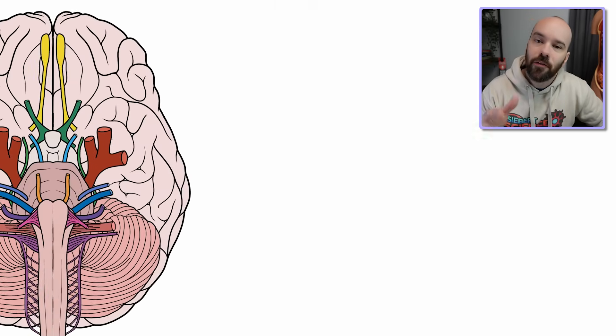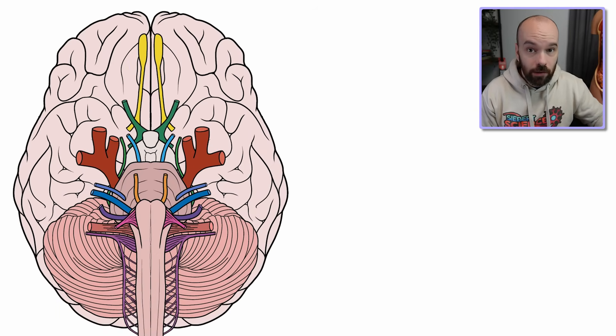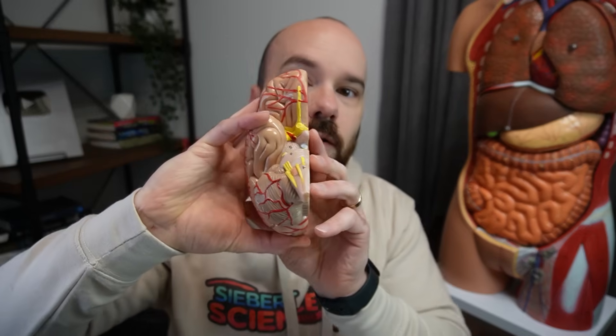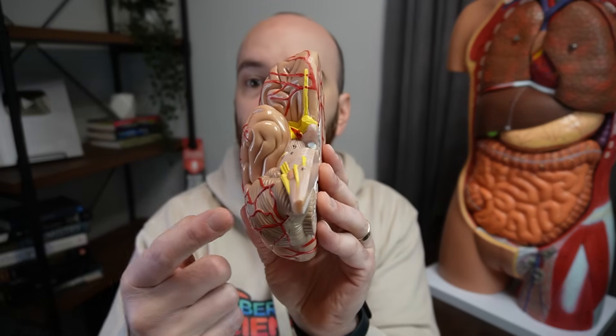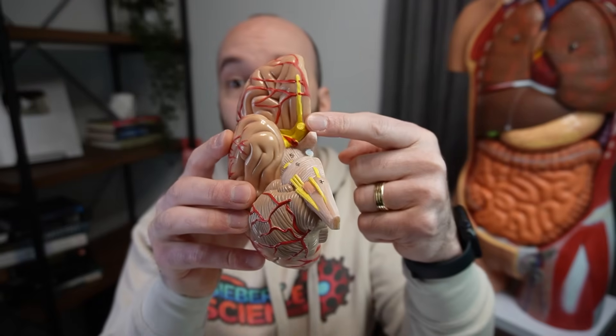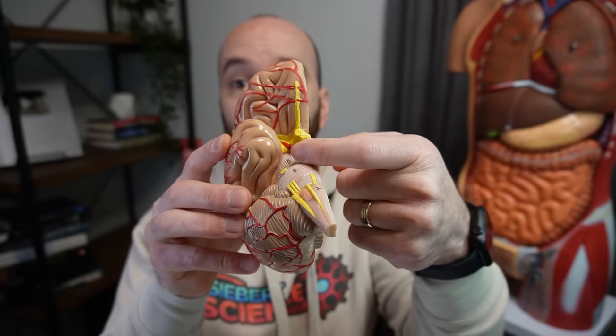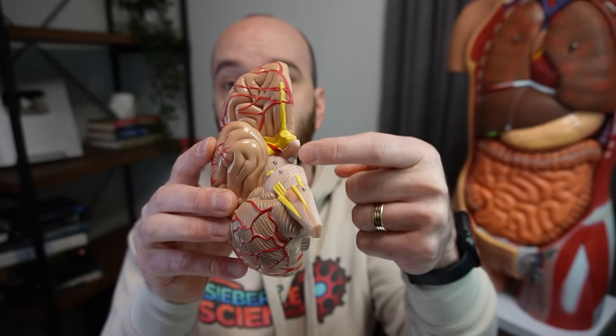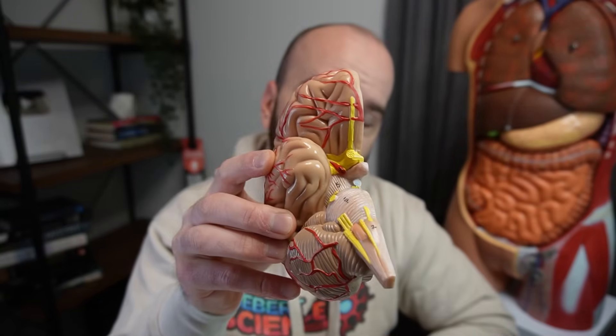Our diagram for the 12 cranial nerves is actually an inferior view of the brain. If I take my brain from Anatomy Warehouse here, it's sitting in my head like this — we're actually looking from underneath. You can see all of those cranial nerves in yellow sticking off of the diencephalon and the brainstem. Those are the ones we're learning in this video.